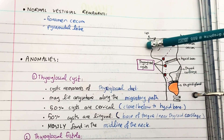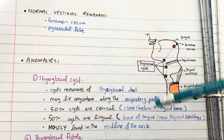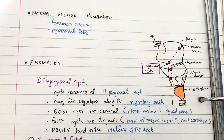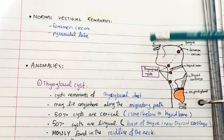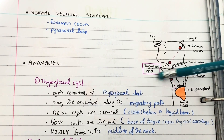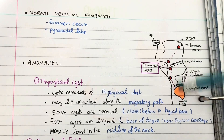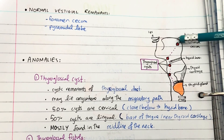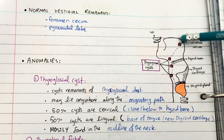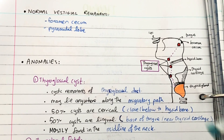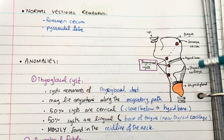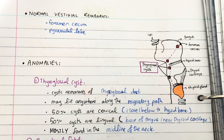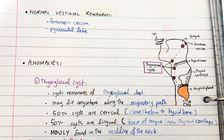Let me orient you to this drawing. These are the lips, this is the chin, and I'm showing you the inside of the neck area. Here is the tongue, this is the foramen cecum — this little triangle shape — this is the hyoid bone, this is the thyroid cartilage, this is the thyroid gland, and these are the tracheal rings.